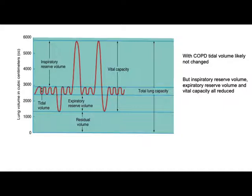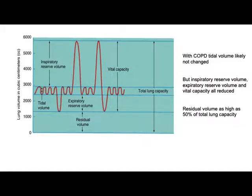Expiratory reserve volume is also decreased. If they need to expel a lot of air, they can't do so as adequately as a healthy person. Their vital capacity is decreased as a whole. Residual volume can be very high — often half of total lung capacity in patients with progressed or severe COPD — and the functional space of the lungs is severely decreased.